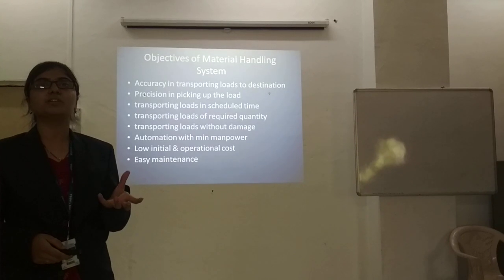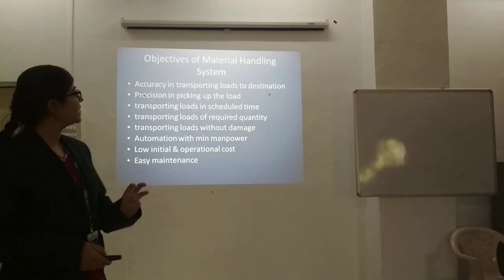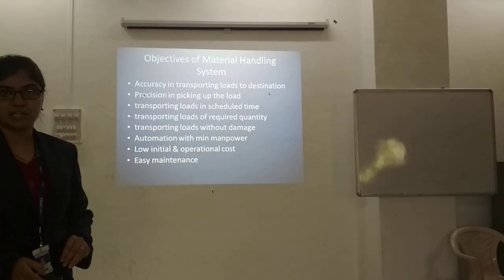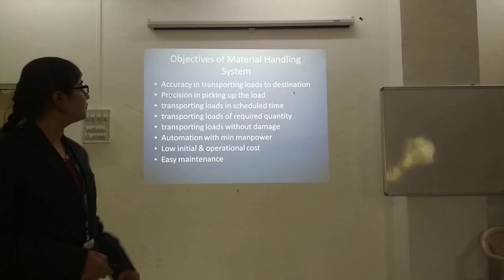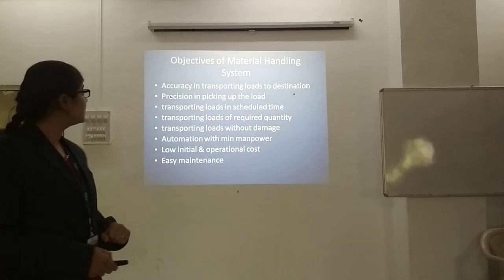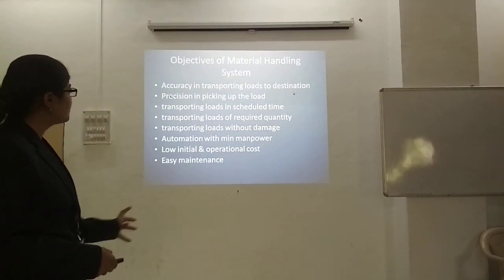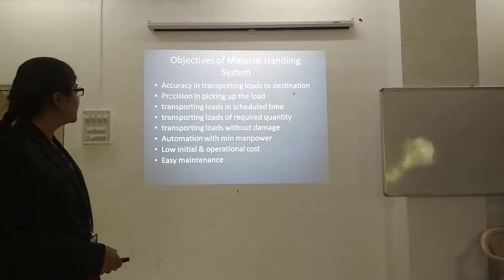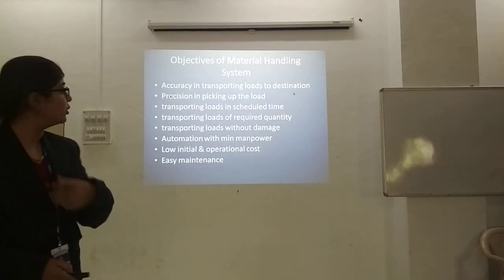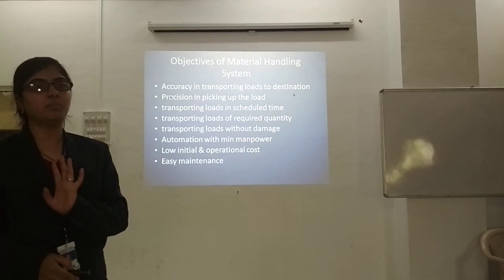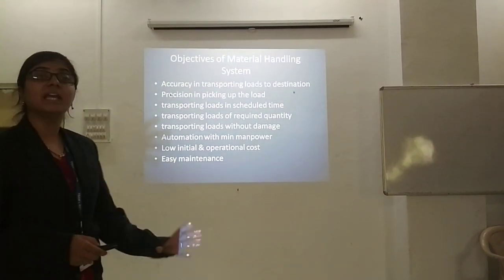Now with what objective do we generally design the material handling system? These are the ideal qualities. It should be accurate in transporting load to the desired destination — there should be no compromise in the quantity as well as quality of the load. Precision in picking the load. The load should be transported in scheduled time because time is money. It should transport loads of required quantity without any damage to the component. There should be automation with minimum power required, low initial and operational cost, and it should be easy to maintain.